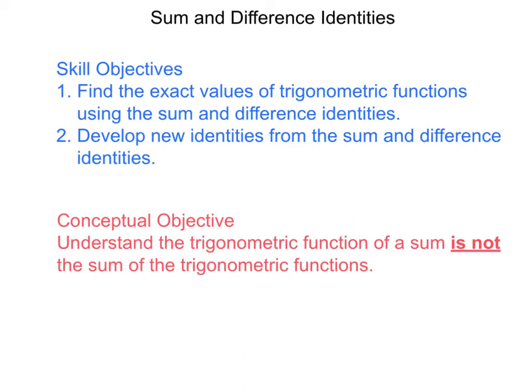Hi everyone and welcome to the video on the sum and difference identities. In these identities we're going to be looking at the sine, cosine, and tangent of a sum or difference of two angles and the patterns associated with that. Our skill objectives are: one, find the exact values of trig functions using the sum or difference identities; two, develop new identities from the sum or difference identities. Our conceptual objective is to understand that the trigonometric function of a sum is not the same as the sum of the two trig functions.